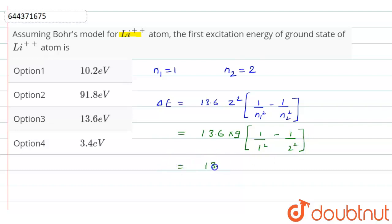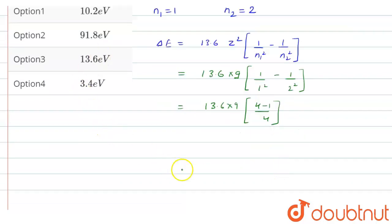We get 13.6 into 9 into 3 divided by 4, which is equals to 91.8 electron volt. So for lithium 2+ ion, the first excitation energy will be equals to 91.8 electron volt. So option 2 is the right answer.